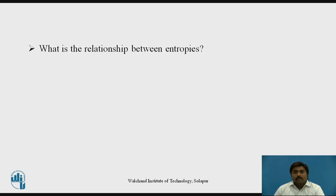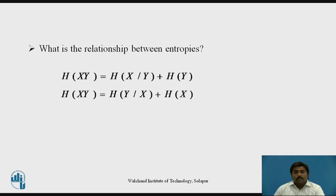There are different entropies: source entropies, receiver entropies, conditional entropies, and joint entropies. In the last video, we already studied about these entropies. That relationship is: the joint entropy H(x, y) equals conditional entropies plus source or destination entropies.